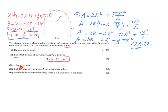Given that r can vary, we need to find the value of r for which A has a stationary value. A stationary value means the gradient is zero — on a graph this corresponds to a local maximum or minimum. So we set the derivative equal to zero.